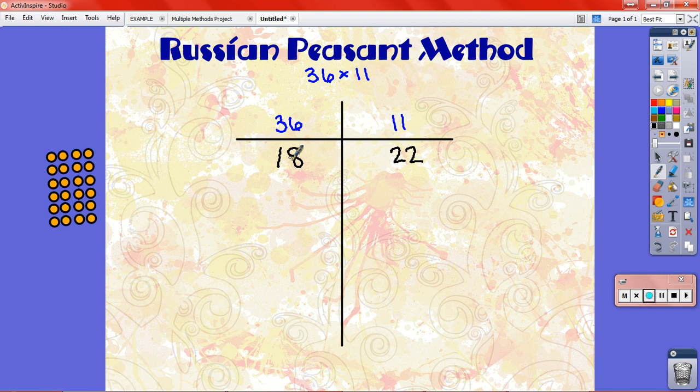Now I have to cut 18 in half. 18 in half is 9. Now 22 doubled is 44. I can't cut 9 in half. This is where Russian peasant method is really interesting. They decided, so I can't cut 9 in half evenly. I'll just look at the next lower number.